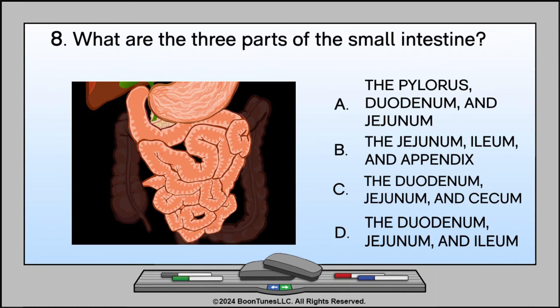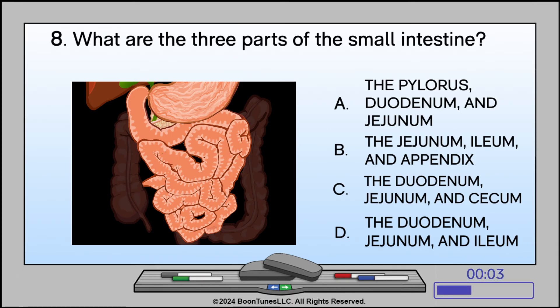What are the three parts of the small intestine? A. The pylorus, duodenum, and jejunum. B. The jejunum, ilium, and appendix. C. The duodenum, jejunum, and cecum. D. The duodenum, jejunum, and ilium. The answer is D: The duodenum, jejunum, and ilium.